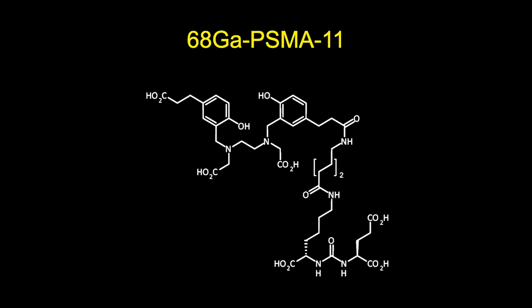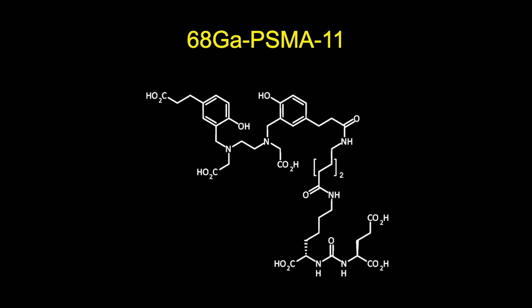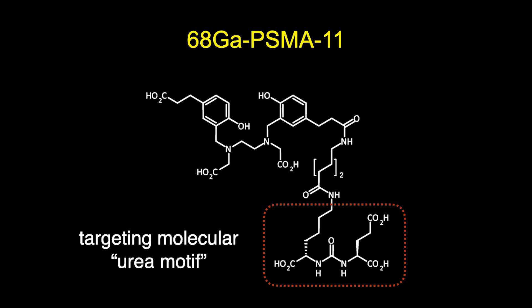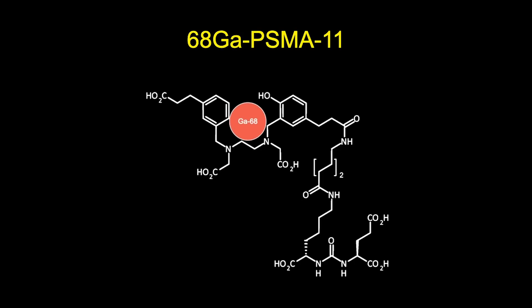At UCSF we've been using a molecule called Gallium-68 PSMA-11. This is the molecular structure of that molecule. On one half is a chelator — the part that binds to Gallium-68 — and on the other side is a urea motif, a small motif that binds to PSMA and gives this molecule its specificity for prostate cancer. We then put Gallium-68 into this molecule and inject it into patients.